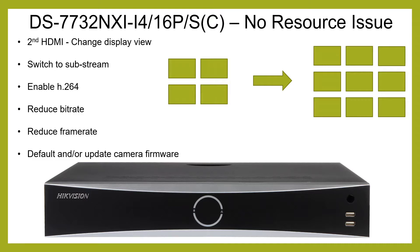On this NVR there is twin HDMI output. When you plug in the second HDMI, what happens a lot is all your pictures are going to just disappear and you're going to get a 'no resource' issue on all the cameras. There is a reason why it's doing this and unfortunately you can't change it, but there is a workaround. As soon as you activate the second HDMI monitor you get the 'no resource' issue on every camera — that's because the NVR is maxed out on what it can handle.